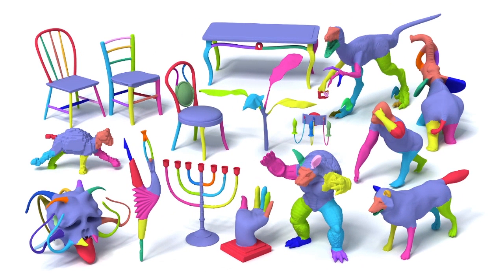This figure shows a gallery of generalized cylinder decomposition results on a mixture of organic and man-made objects, all obtained using the same default parameter setting.